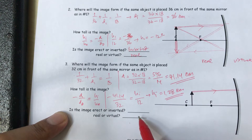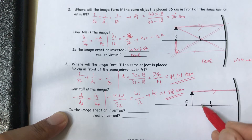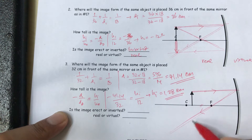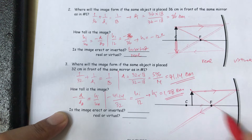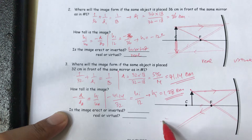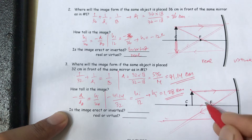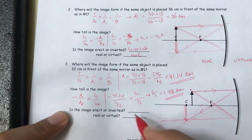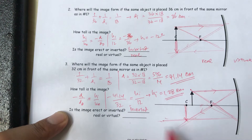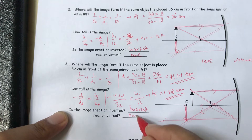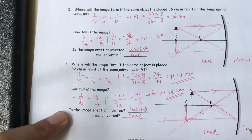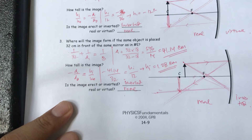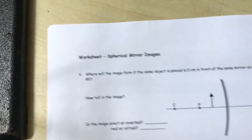We draw the ray starting from the top of the object, parallel to the principal axis. It reflects through the focal length. The image obtained is inverted and real.